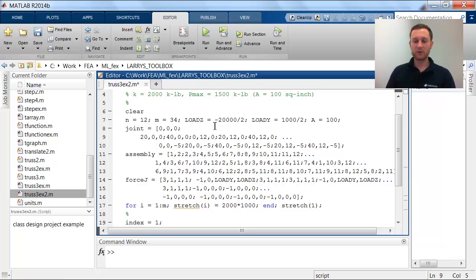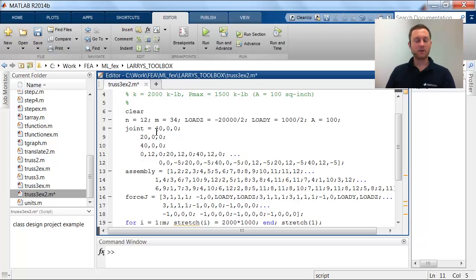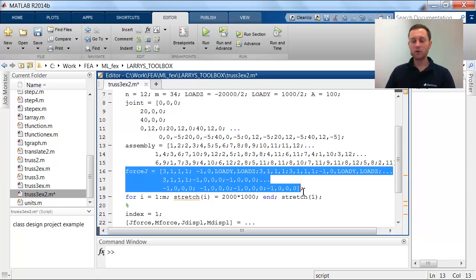Larry already introduced some loads. What we see here, he calls the vector joints. It's nothing but a 12 by 3 vector giving the node coordinates. So I don't want to put it all down. But first node is at position x0, y0, z0 and then going down 12 nodes. The assembly is exactly what I've introduced you as connection or as an ID matrix. It says the first element is comprised of the nodes 1 and 2. And then again, he goes down and defines the 34 truss elements.